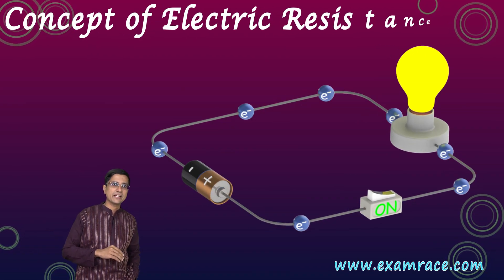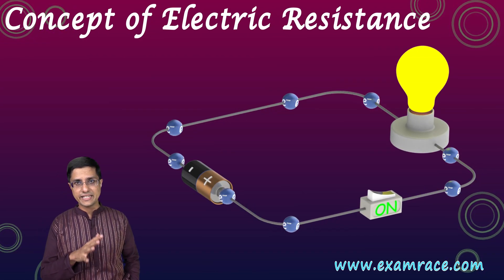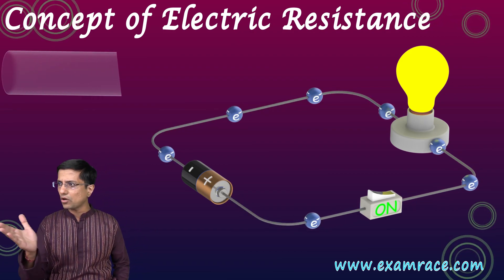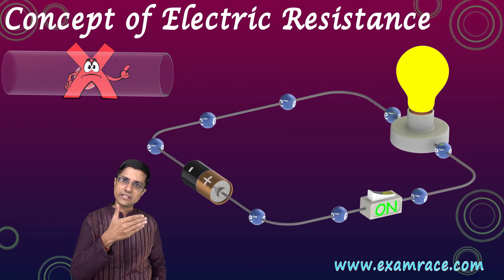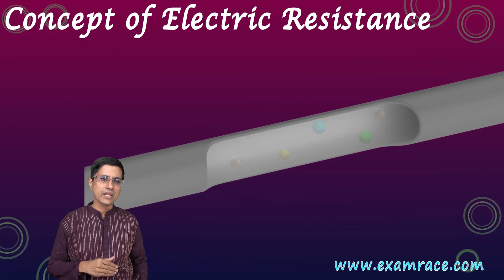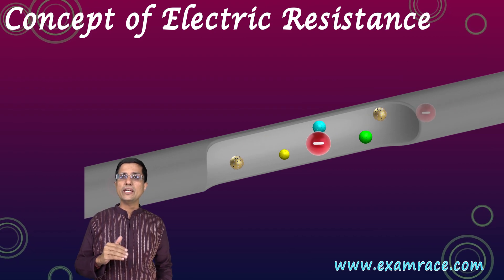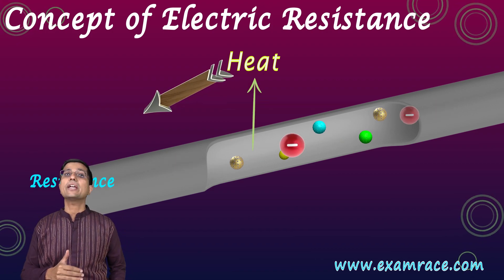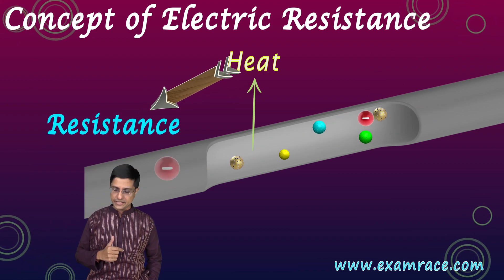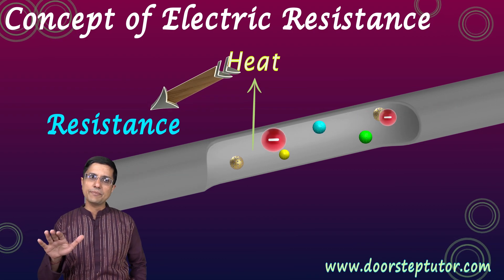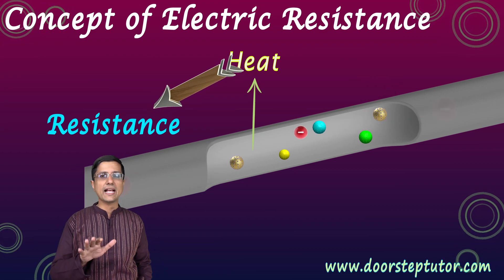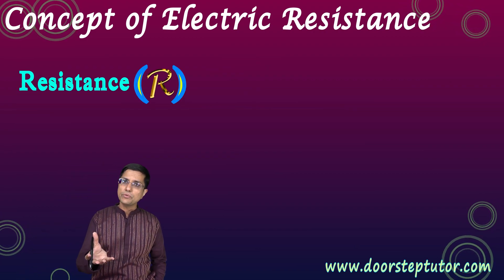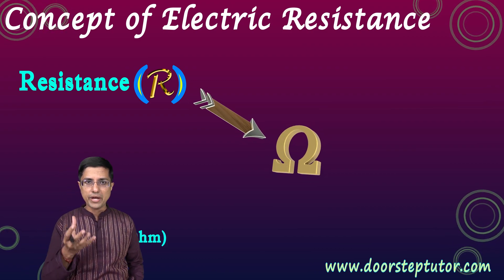The next important concept is electrical resistance. All the normal day materials — wires, switches, and so on — as electrical current flows through them, they offer some resistance to the flow of this electric current; they try to stop it. This is what is known as electrical resistance. All normal materials have it, and it is a property of the material itself.